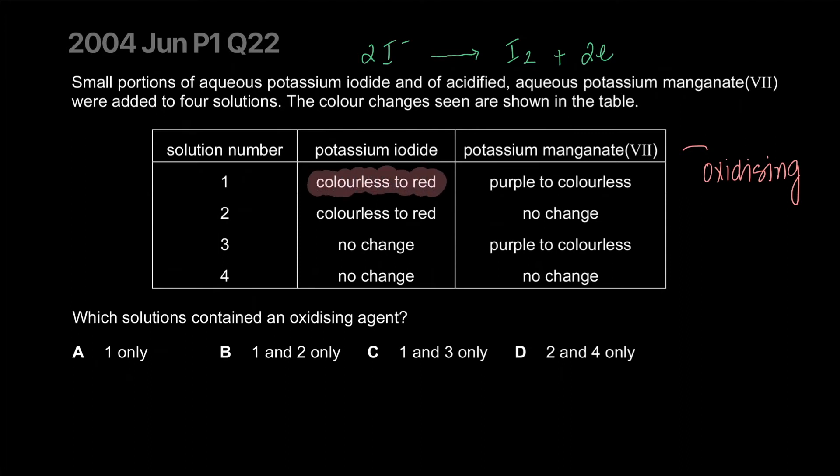Solution one has some sort of oxidizing agent because iodine got oxidized. Solution two has some kind of oxidizing agent because it still got oxidized. Two oxidizing agents do not react much like two acids will not react with each other. So one and two are our answer which contain oxidizing agents.